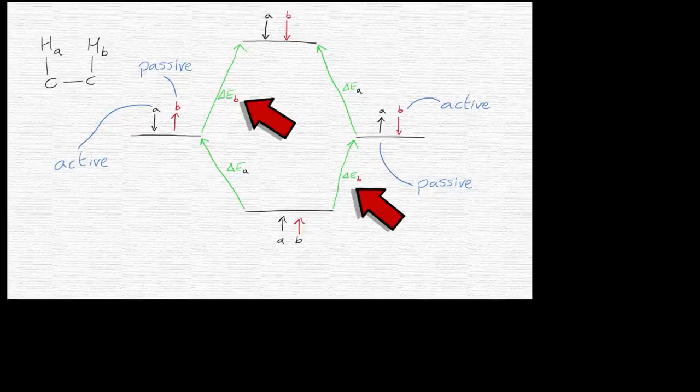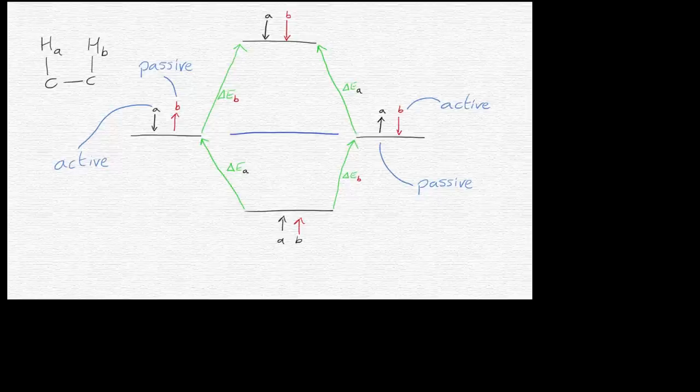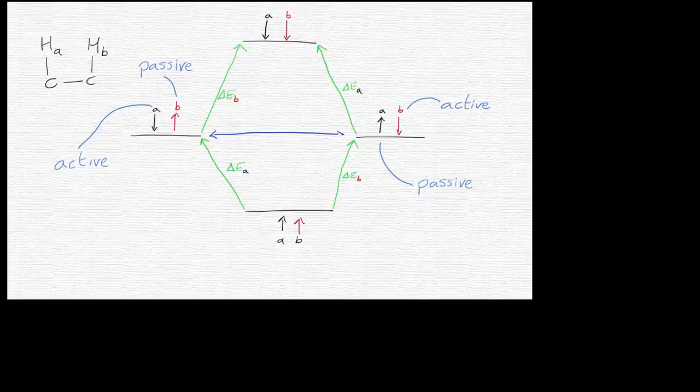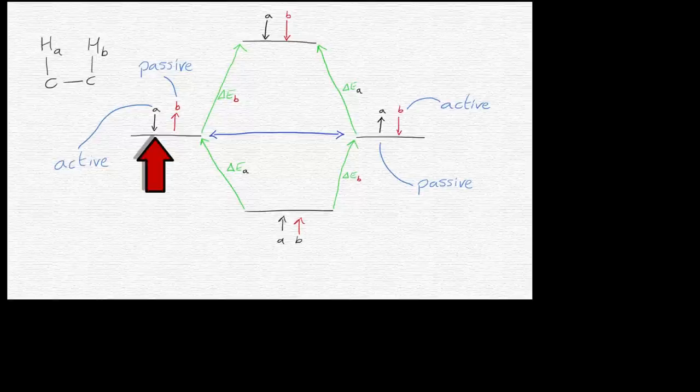Now, there are also two other quantum transitions here, which are actually disallowed by the quantum mechanical selection rules. And the first one is this one shown here, which is a zero-order quantum transition. And you have to look carefully here, but if you look at the HA spin, that goes from, if we look at the left-hand side going to the right-hand side, that goes from a down to an up spin state.